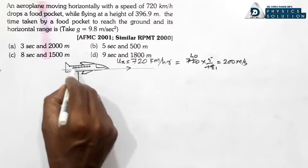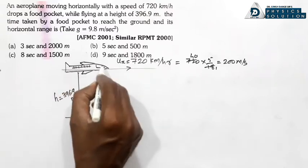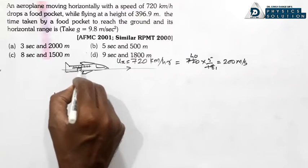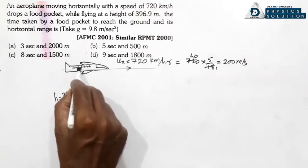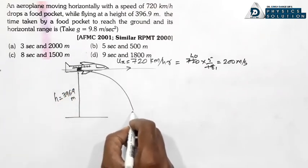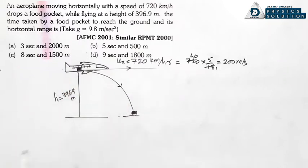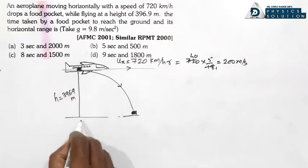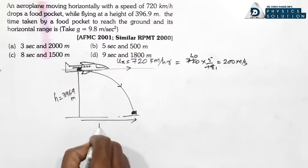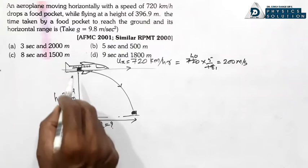Jab food packet is point se drop hota hai, toh usko bhi speed utni milti hai jitni aeroplane ki. Toh yeh seedha neeche nahi aayega — it moves along a parabolic path. Hume yeh horizontal range R nikalni hai aur saath mein time t bhi nikalna hai.